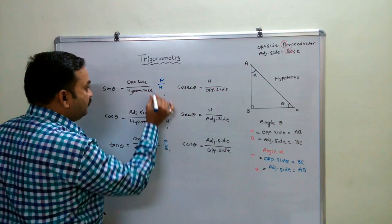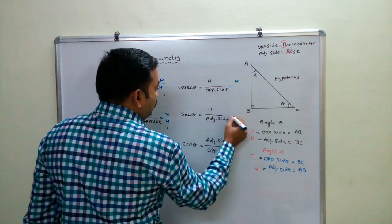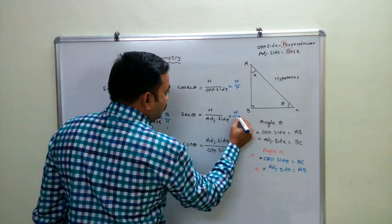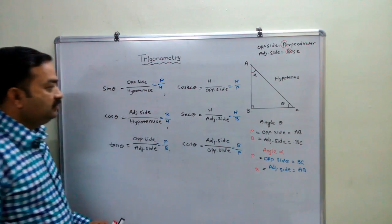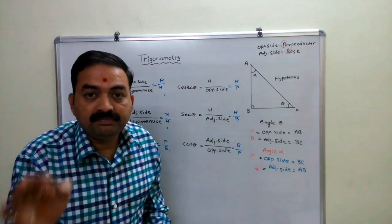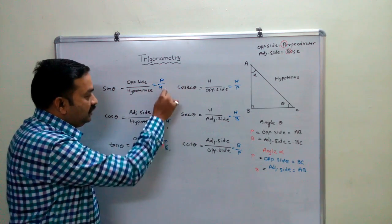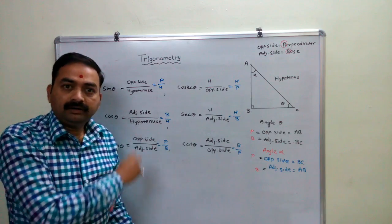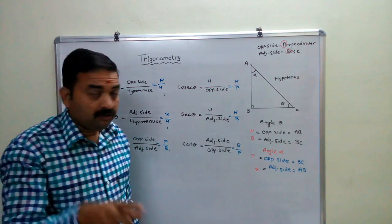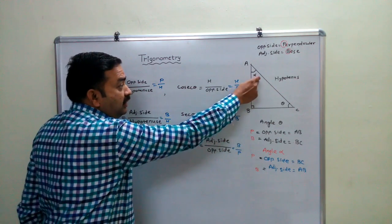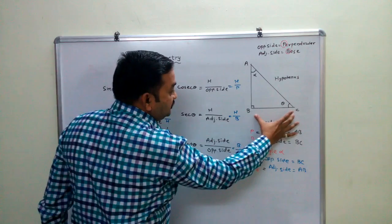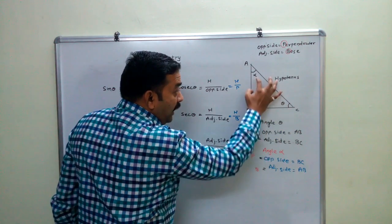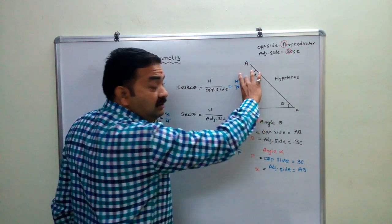In this way, you can remember the trigonometric ratios more easily. Now, keep this in your mind: if you use acute angle alpha, then for angle alpha the opposite side will be BC. BC is the perpendicular for angle alpha, and AB is the base.